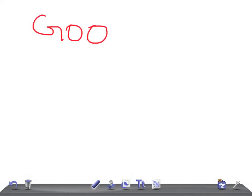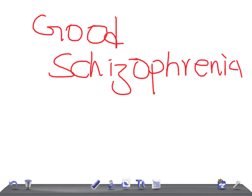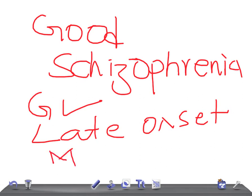Now let me talk about the prognostic factors for schizophrenia. The good prognostic factors include: good pre-morbid functioning, late onset of schizophrenia, and being married — all of these are good prognostic indicators.